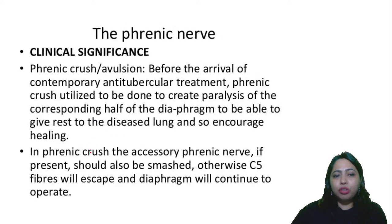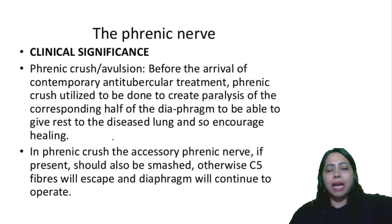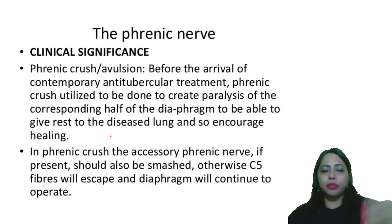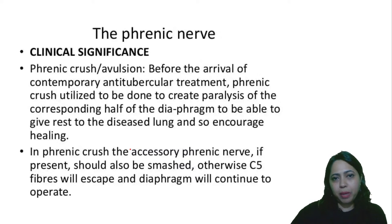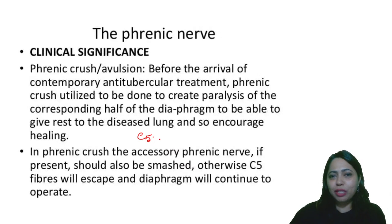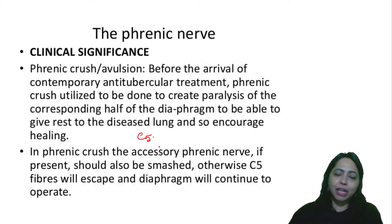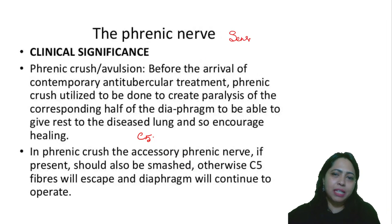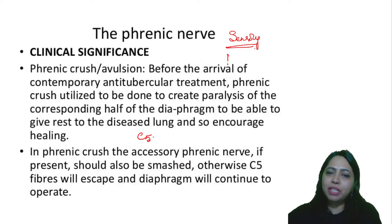In phrenic crush or avulsion, if the accessory phrenic nerve is present, it should also be crushed; otherwise the C fibers carrying roots for the phrenic nerve would escape and the diaphragm would still operate and cause pain. So remember: the sensory supply to the diaphragm is via the phrenic nerve.